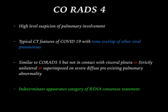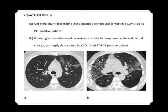CORADS 4 is high level suspicion of pulmonary involvement. It shows typical CT features of COVID-19 with some overlap with other viral pneumonias, similar to CORADS 5 but not in contact with the visceral pleura, or strictly unilateral, or superimposed on severe diffuse pre-existing pulmonary abnormality. CORADS 4 falls under the indeterminate appearance category of the RSNA consensus statement. An example shows a positive patient with ground glass superimposed on severe centrilobular emphysema, with visceral pleural contact present and interlobular septal thickening that is unsharply demarcated.